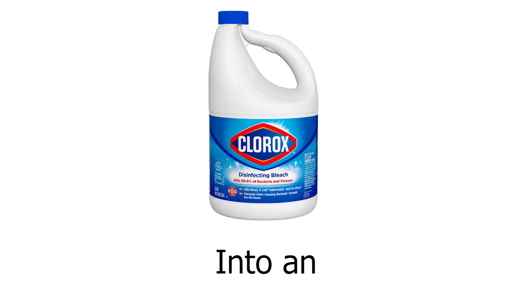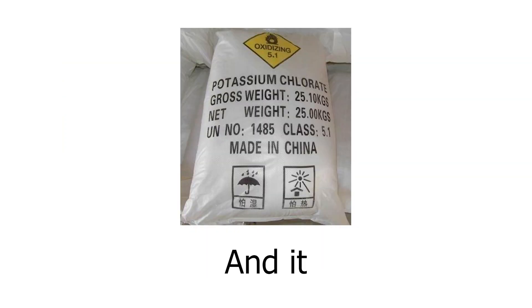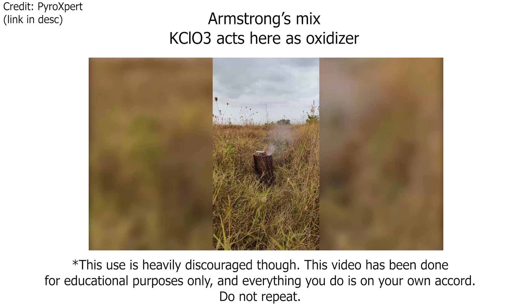In this video I'll be turning regular bleach into an extremely unstable and powerful oxidizer which can be used in most amateur rocket fuel compositions. This oxidizer is potassium chlorate and was once used in fertilizers and now it's mostly known as the go-to for amateur pyrotechnics.